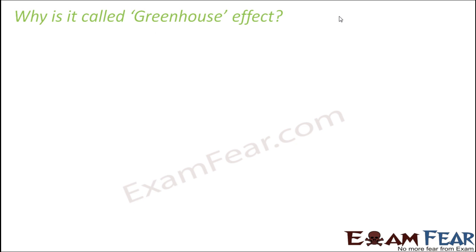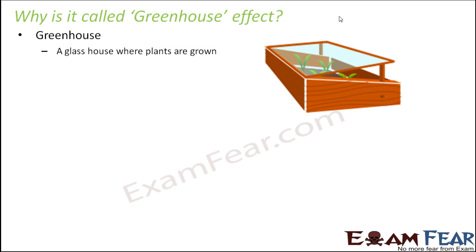Why is this phenomenon called the greenhouse effect, and how is it related to a greenhouse? The term greenhouse is used for a glass house where plants are grown. Especially during winters, when there is not sufficient sunlight for plants to grow, this technique is used — you take a box whose top cover is made of glass, and inside you put the plants. This glass allows the sun's rays to enter inside but does not allow the heat to come outside, so the glass house traps the heat inside. That is how it helps the plants to grow.